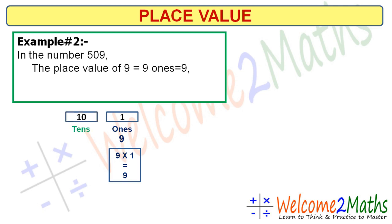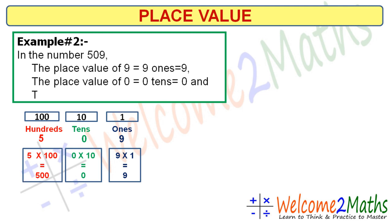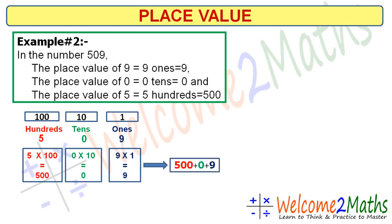The next digit is 0. 0 is at the tens place, so the place value of 0 is 0 × 10 = 0, that is 0 tens. The next digit is 5. 5 is at the hundreds place, so the place value of 5 is 5 × 100 = 500. By adding the place values — 500 + 0 + 9 — we get the actual number, that is 509.